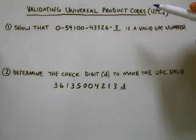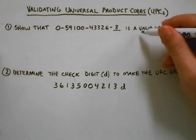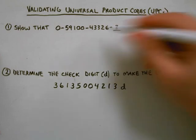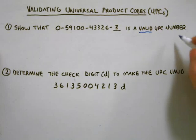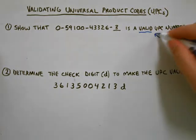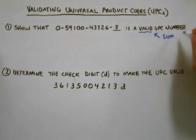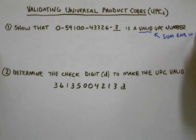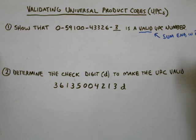In order for a number to be valid, the sum after applying the pattern must end in zero. What I mean by that is the total sum — the last digit has to be a zero. So like 20, 30, 40 — any number basically divisible by 10.